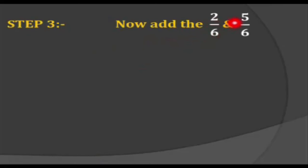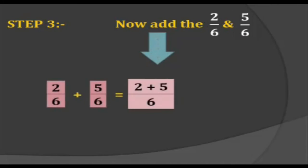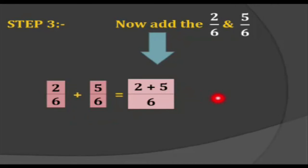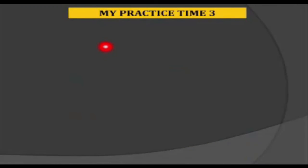In the third step, we add 2 by 6 and 5 by 6. We add only the numerators — 2 and 5 — and write the denominator as it is. So 2 plus 5 equals 7, and the answer is 7 by 6. Now we will solve a few questions from practice time 3.